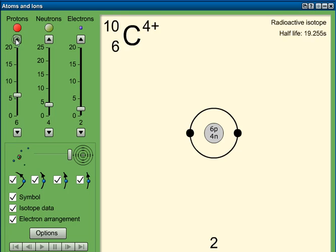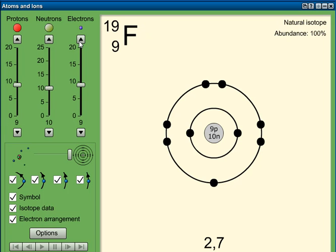Now if we quickly, because we're running out of time, go all the way up to fluorine, we'll find the natural isotope of fluorine and give it the electrons that it should have. This is a fluorine atom - it has nine protons, ten neutrons, giving it a mass of 19.